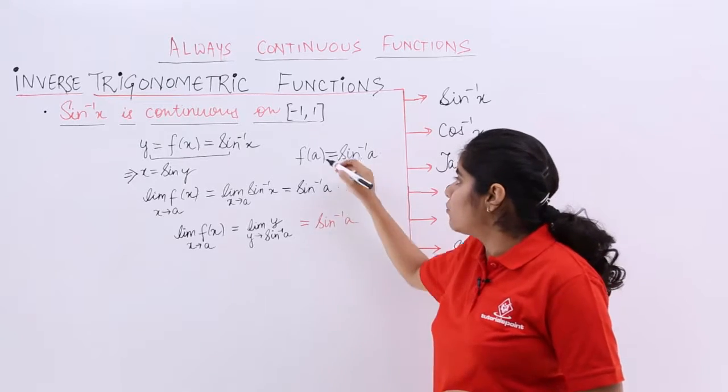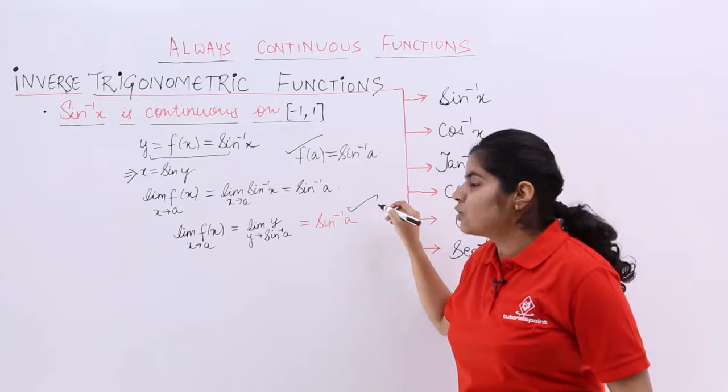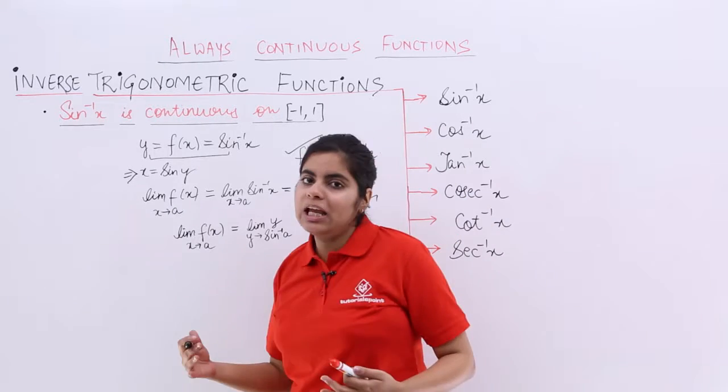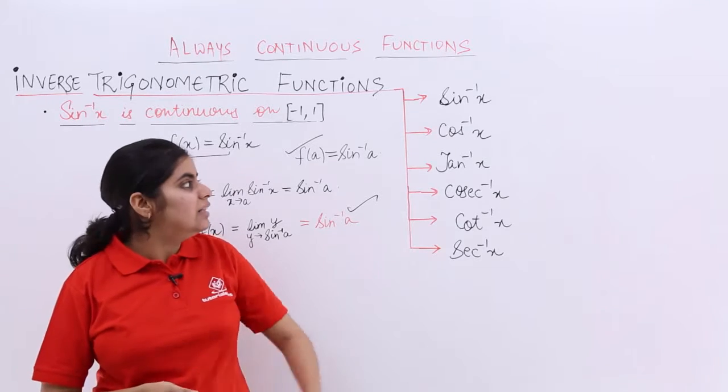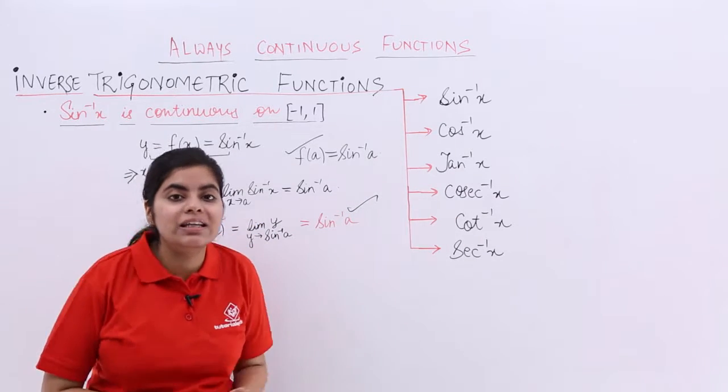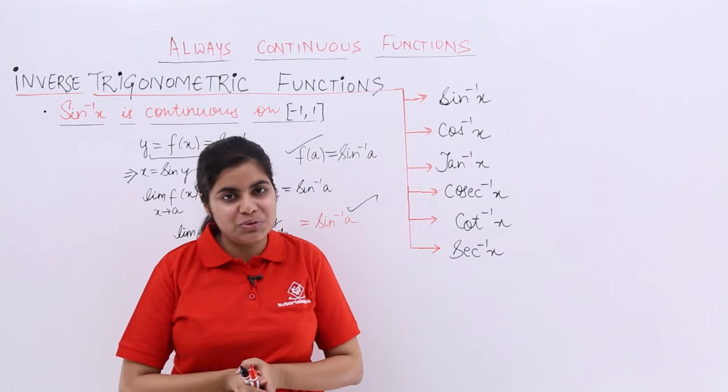So, you started with f of a being differently sine inverse a explicitly. The answer to the limits is also sine inverse a. Since both these are equal, I say that I have proved for continuity. And similarly, the rest all you can prove and conclude that inverse trigonometric functions are always continuous in their respective domains.